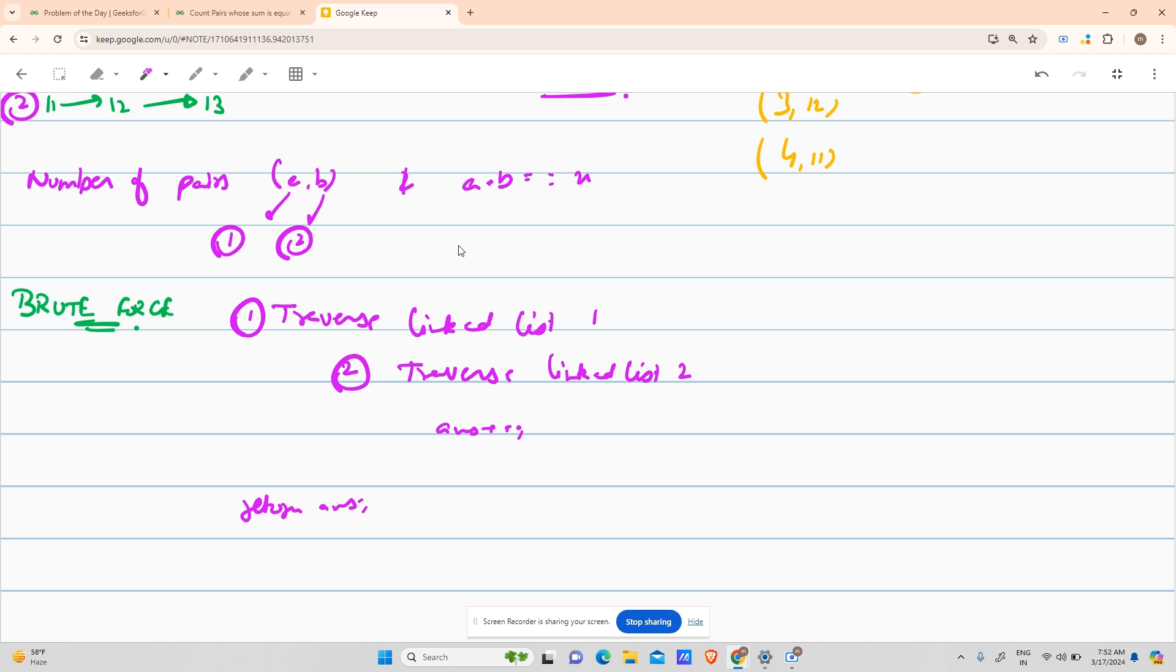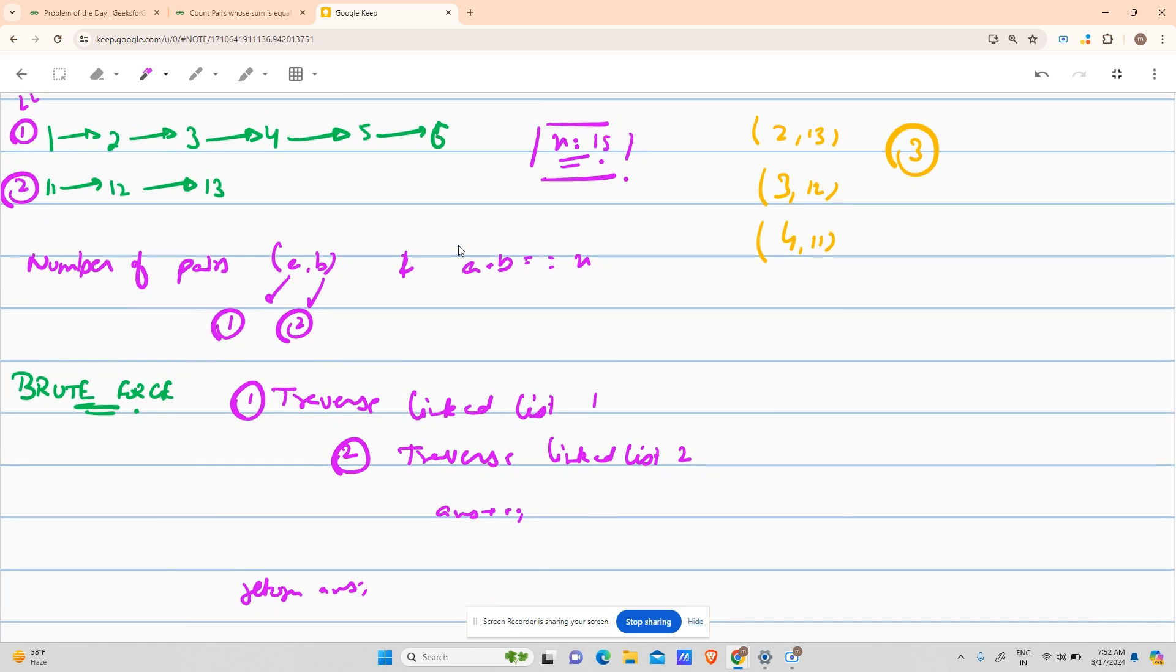This is the brute force approach. What is happening is I am standing at 1, seeing if 1 plus 11 equals 15, no. 1 plus 12 equals 15, no. 1 plus 13 equals 15, no. I went to 2: 2 plus 11 equals 15, no. 2 plus 12 equals 15, no. 2 plus 13 equals 15, yes. So answer plus plus, answer becomes one. After that going to 3 and repeating the same steps of 11, 12, 13. Going to 4 and repeating the same steps, and so on.